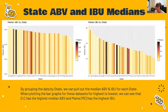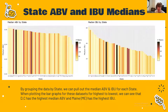Another interesting insight is for the ABV: Colorado and Michigan, despite having a high number of beers, are still on the left side of the chart having high median ABVs. For the IBUs, it follows a more predictable pattern of the states with a high number of beers tending to be in the middle and not having as extreme median values.